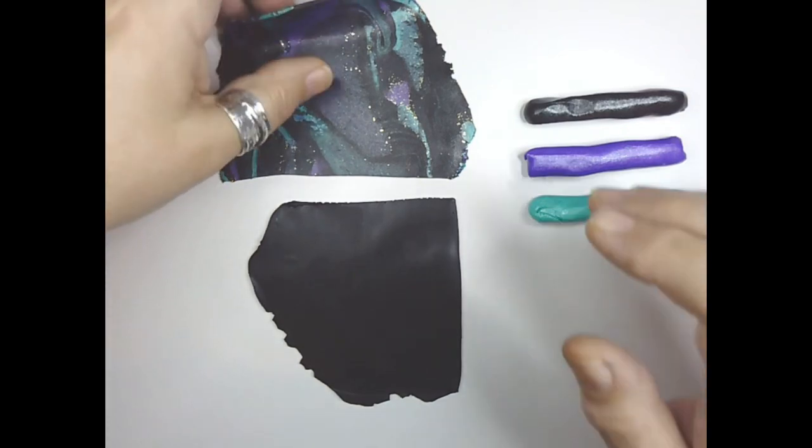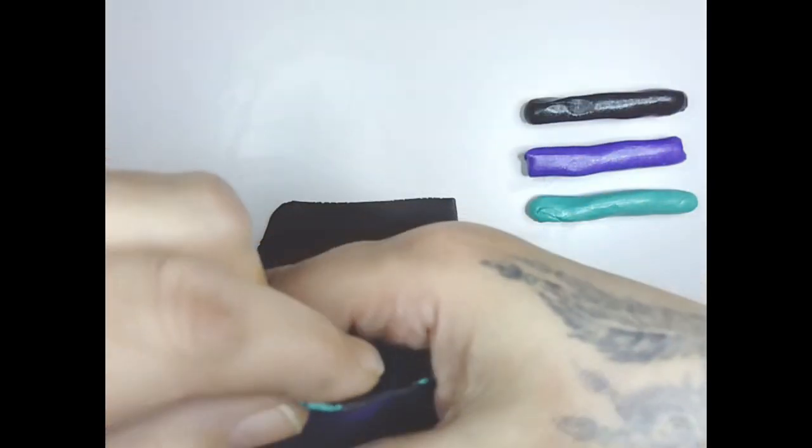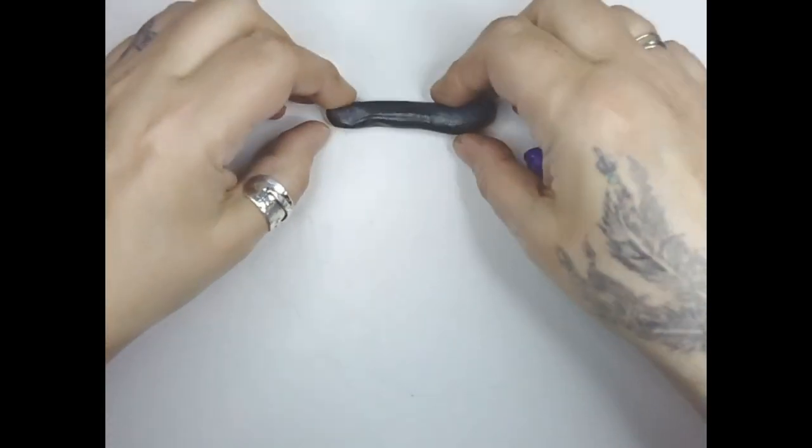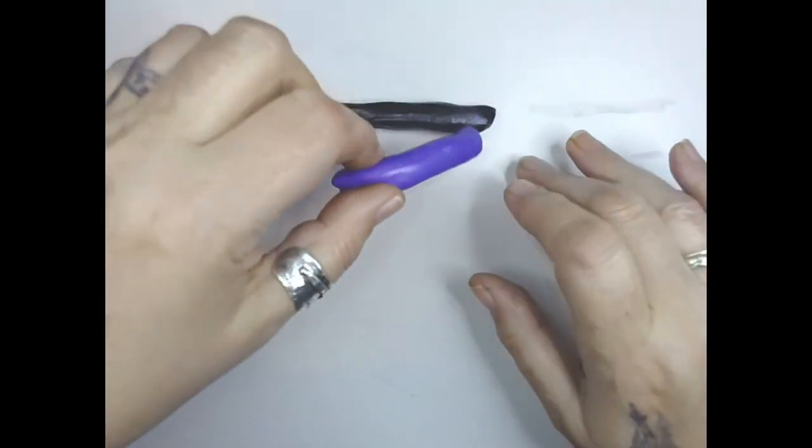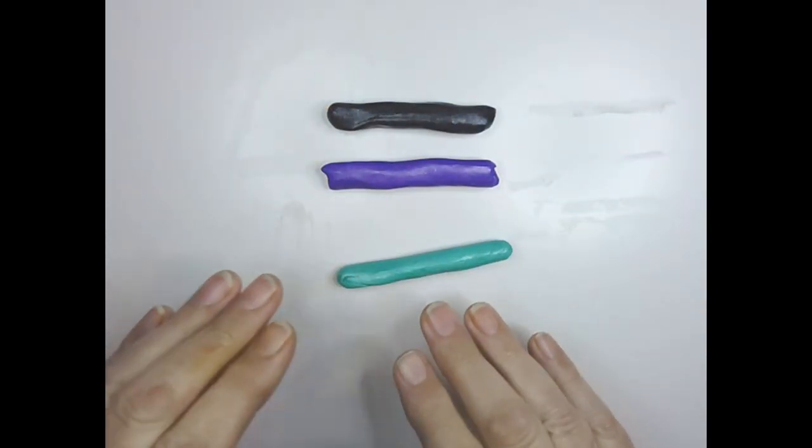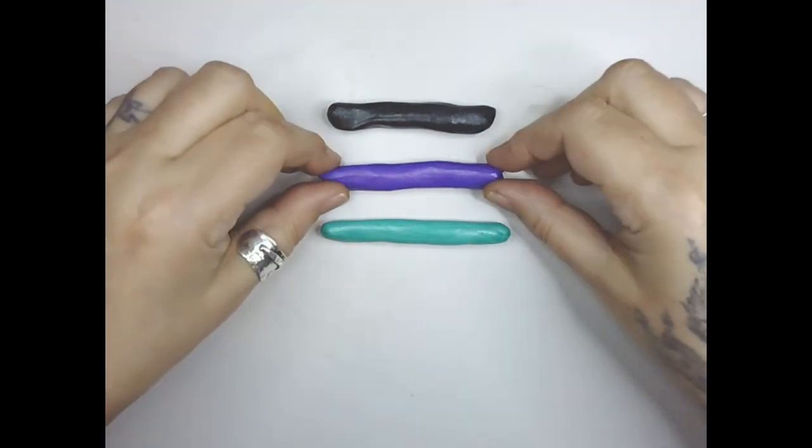This here is just some scrap clay I've rolled out on a number three. I'm not going to be using it yet, and then I've got some Fimo black rolled out on a number two. I've seen variations of this going around now but I don't know what the technique is called, I'll just try my take on it.